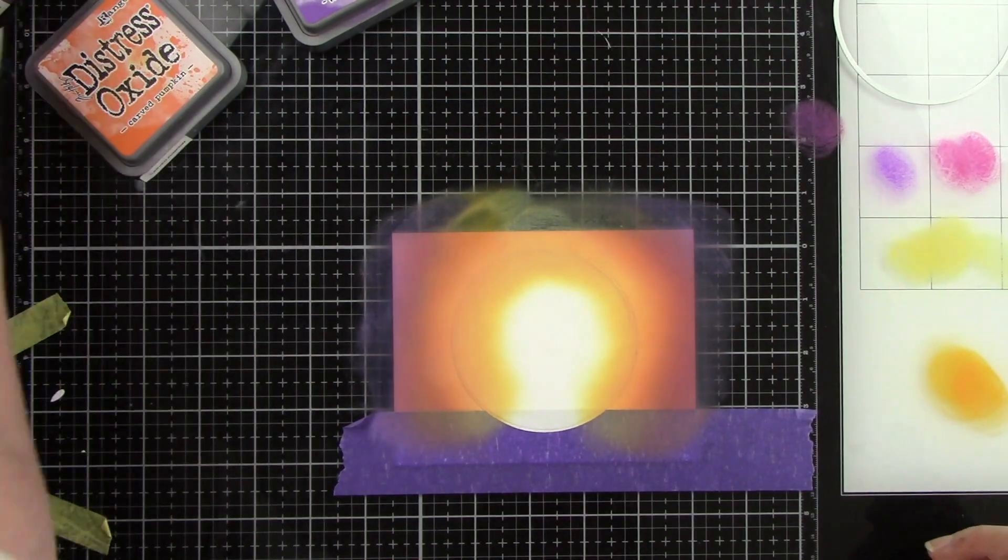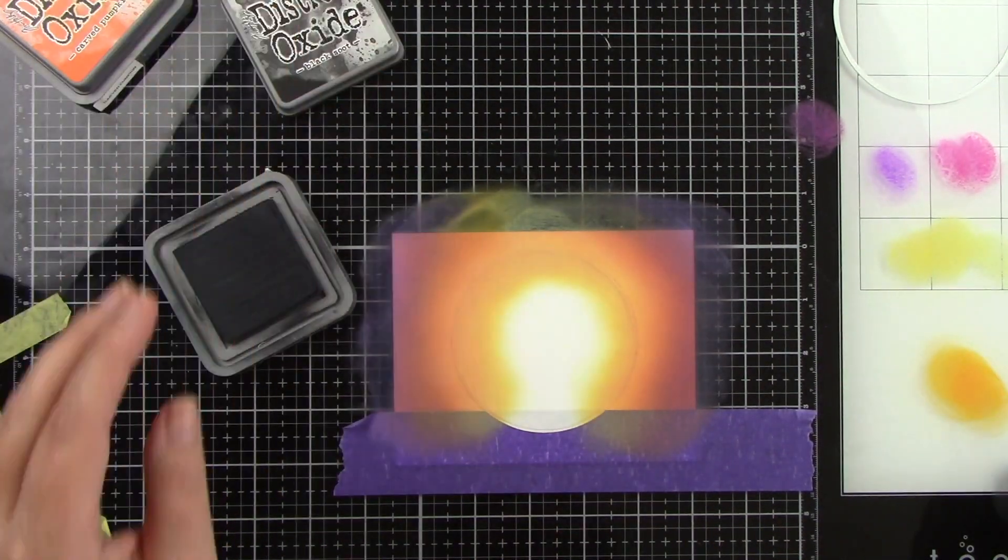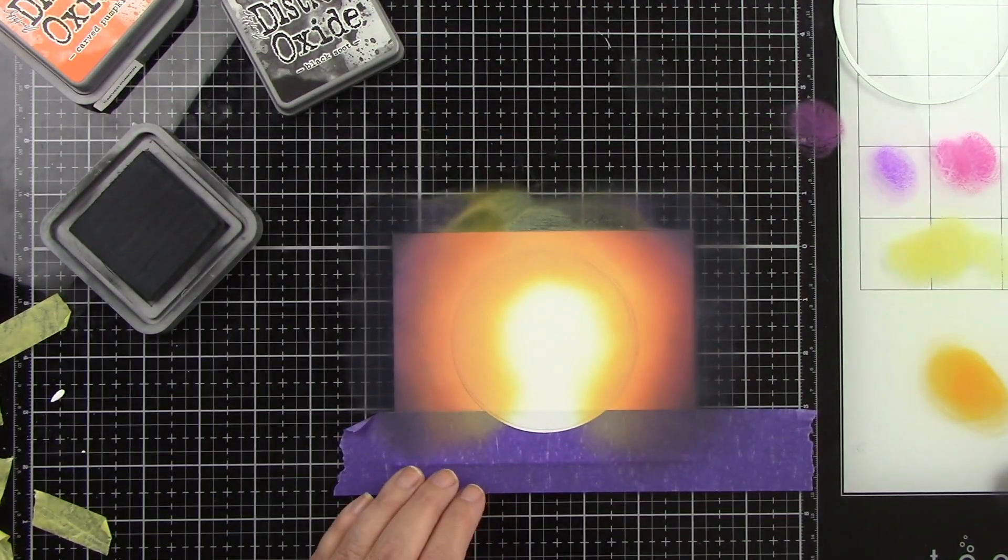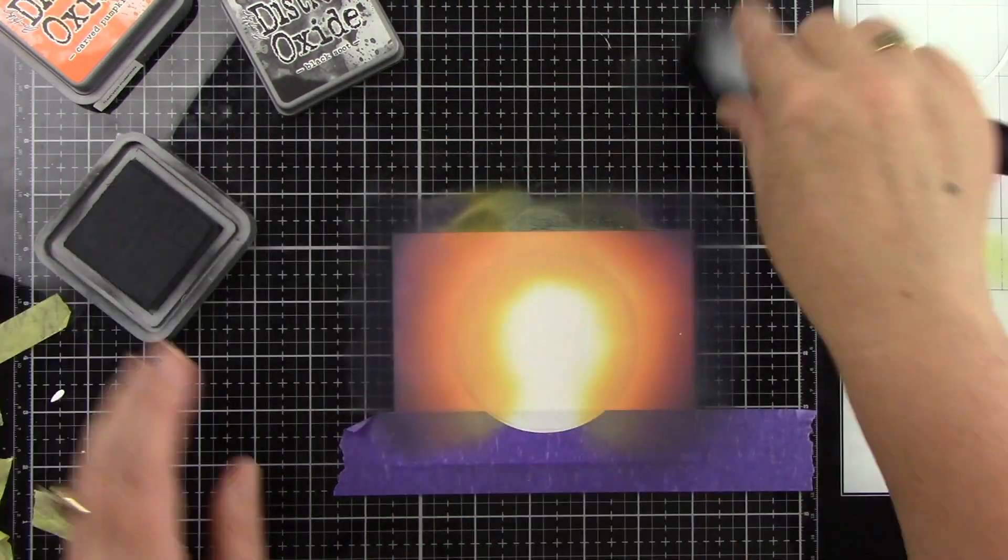The wilted violet and the black soot give it that dark nighttime sky. As you can see as I keep blending, it just gets better and better. Now I'm coming in with the black soot and just adding that a little bit on the sides of my card panel.